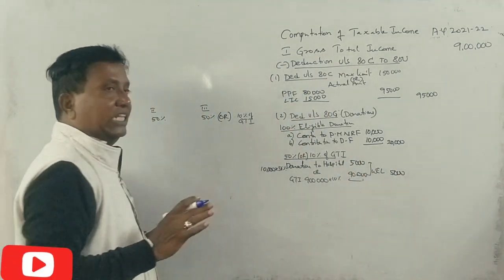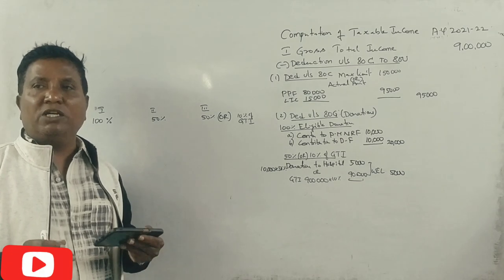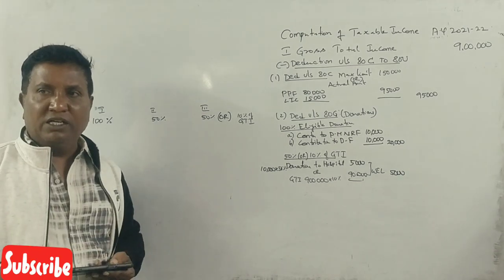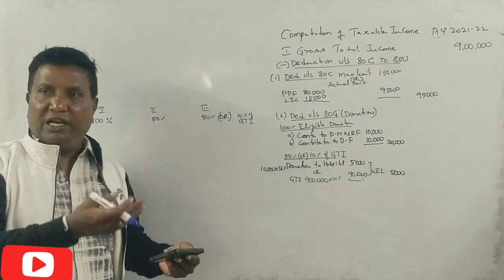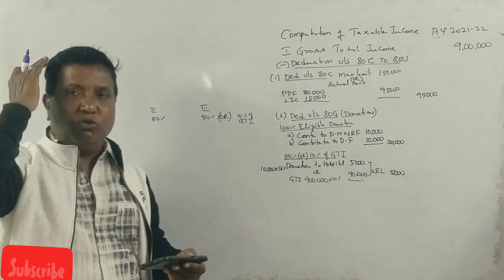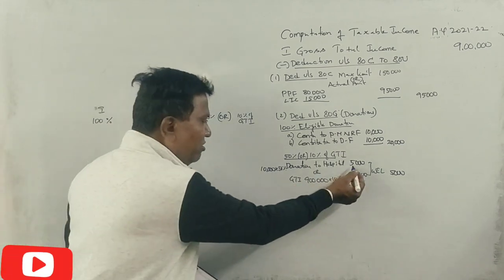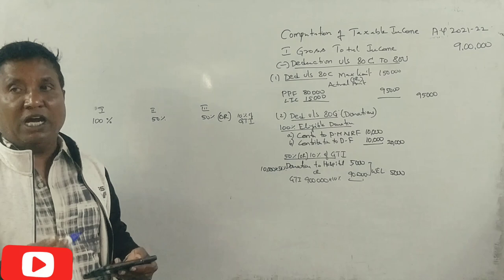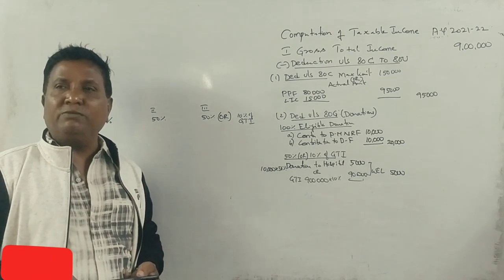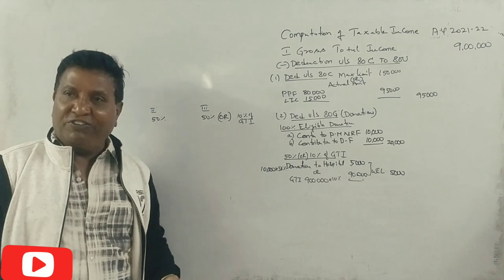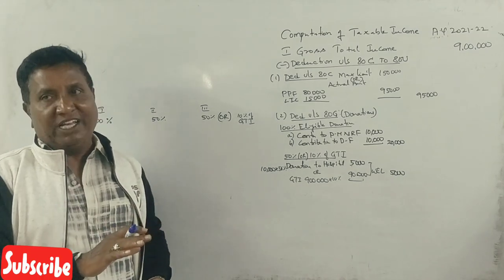To qualify for the deduction, the donation must go to an approved trust or institution verified by the income tax officer. For example, suppose gross total income is 4 lakhs — 10% would be 40,000. If you donate 50,000, the qualifying limit is 40,000, not 50,000. So you get deduction only up to 40,000 in that case.